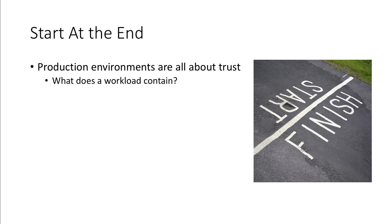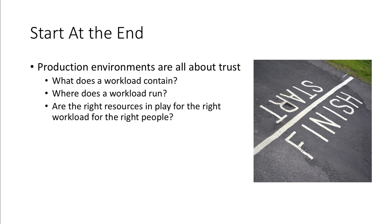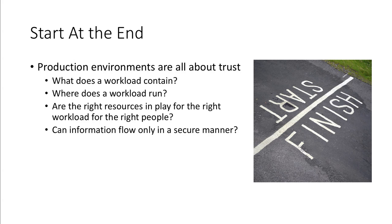In my opinion, production environments are all about trust. By trust I mean things like: I have this thing called a workload — what does it contain, what is this thing I'm running doing? Where is it running? I'm using workload as a generic term; feel free to sub in container, virtual machine, Raspberry Pi — whatever you like. The question you should always be asking in a production environment is: are the right resources in play? Are they doing what they're supposed to be doing? Is it authorized — is the right person running it? You also have to make sure information is being passed along securely.